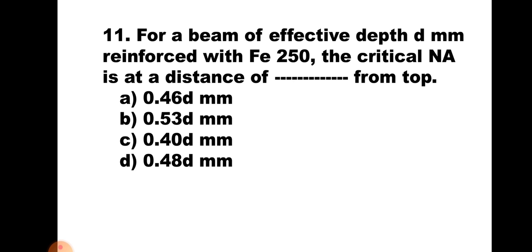Question number 11: For a beam of effective depth D mm reinforced with FE250, the critical neutral axis is at a distance of dash from the top. A. 0.46D mm, B. 0.53D mm, C. 0.40D mm, D. 0.48D mm. Using similar triangle theory from the strain diagram, for FE250 the critical neutral axis is at 0.53D from the top. The correct answer is B. 0.53D mm.